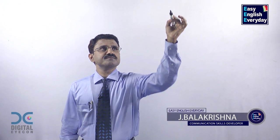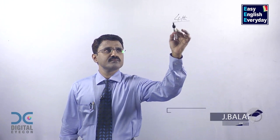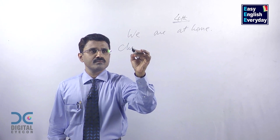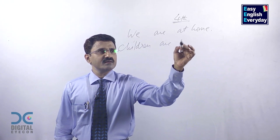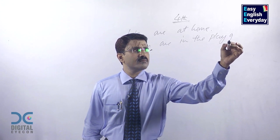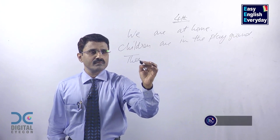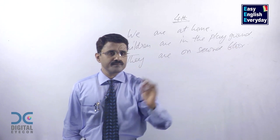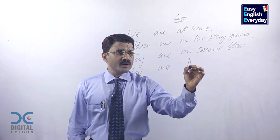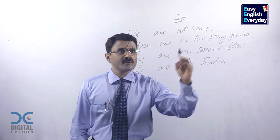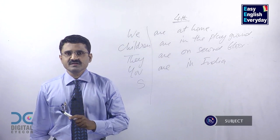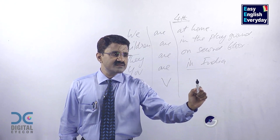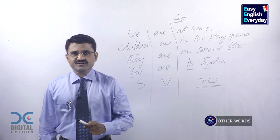Look at these sentences: We are at home. Children are in the playground. They are on the second floor. You are in India. This part of the sentence is called the subject, this part is called the verb, and this part is called other words.